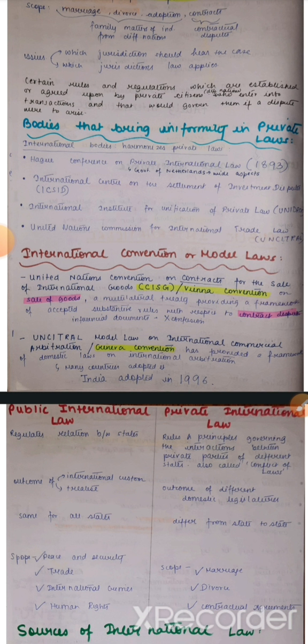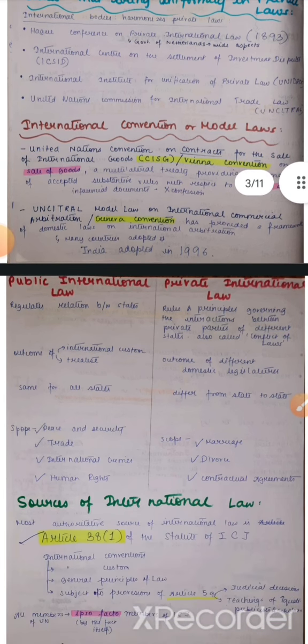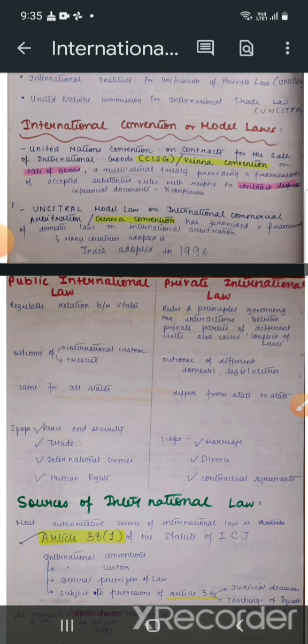These are International Conventions or Model Laws in the sphere of Private International Law. First, CISG — the United Nations Convention on Contracts for the Sale of International Goods, also known as the Vienna Convention. It's on the sale of goods. It's a multilateral treaty — kaafi saare nations ne ek saath baithke yeh treaty sign ki hai. It provides a framework of accepted rules with respect to contractual disputes — it's on contract law, and it uses influential documents so there is no confusion.